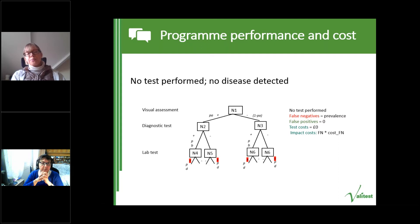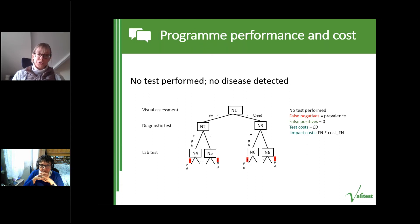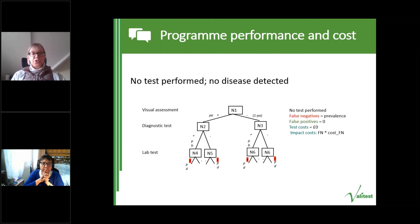Why do we talk about a program? This framework illustrates the whole process from taking the initial sample through doing various tests to the results and their consequences. For example, an inspector could look for symptomatic plants — a visual assessment as a first test — then test positives with a diagnostic test such as an in-field LFD test, then send positive samples to the laboratory for confirmation. Every individual test's characteristics are important, but we are also interested in the aggregate costs, false positives, and false negatives across the whole program.